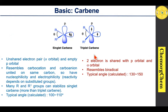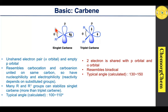Let's move on to singlet as well as triplet carbenes. In the singlet carbene, the unshared pair of electrons is present in the sigma orbital — that means the sp2 hybrid orbital — and there is one empty p orbital. This singlet carbene resembles both a carbocation and a carbanion present in the same system, so this system has both nucleophilicity as well as electrophilicity. Both nucleophilicity and electrophilicity depend on what groups are present at R or R1. The singlet carbene is stabilized by R and R1 groups, and the typical angle between R and R1 is approximately 100 to 110 degrees.